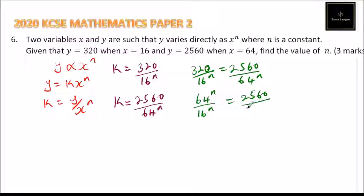Here we can simplify. By 8 you get 4, by 8 you get 32, by 4 you get 1, here you get 8. This one we can write it as 64 divided by 16, all to power n, is equal to 8. 64 divided by 16 is 4.